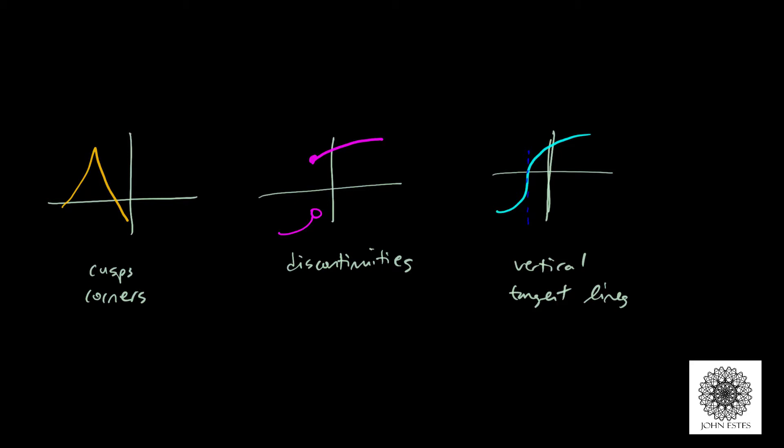So can we characterize exactly when a function has no derivative? And the answer is yes. These are the kind of things you can look out for in a graph. If you have cusps or corners, these sharp points, then you have no derivative at that sharp point. We saw that with the absolute value of x.